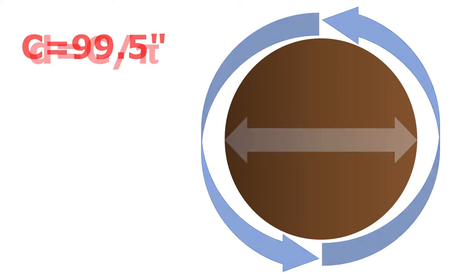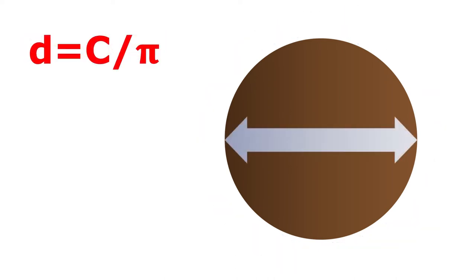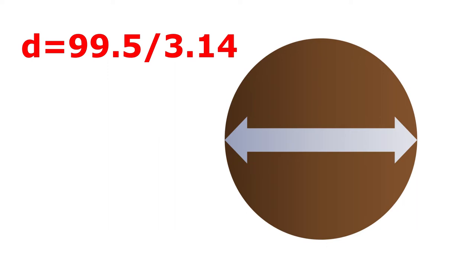And if we know the circumference, we can compute for the diameter by dividing it by pi, or 3.14, which gives us a diameter of 31.68 inches.